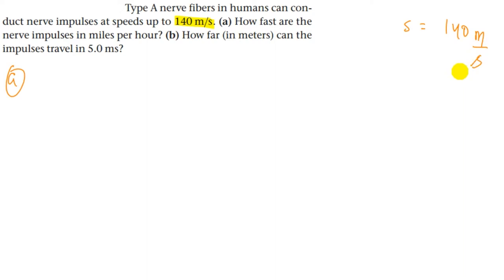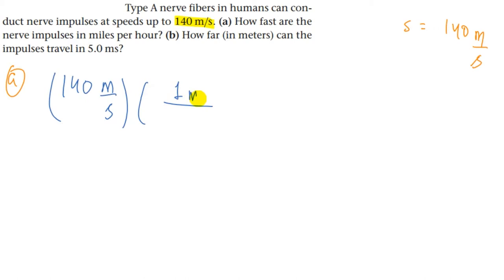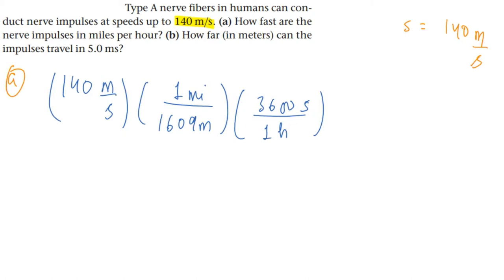We start with 140 meters per second. Since one mile equals 1609 meters, we can convert meters to miles. Then, since one hour equals 3600 seconds, we convert seconds to hours. The seconds cancel and the meters cancel, giving us 310 miles per hour. This is the answer for part A.